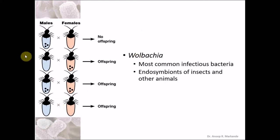These Wolbachia are directly influencing the mating type of the insects. If Wolbachia is not present in the females, there are no offspring. If they are present in females, offspring are produced. Hence the presence of Wolbachia in females directly influences offspring formation. Also, if none of the mating partners have Wolbachia, that also naturally produces offspring.